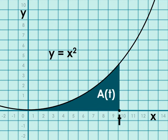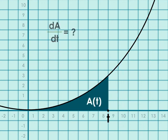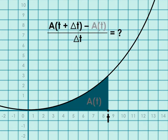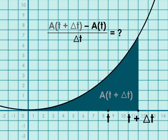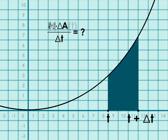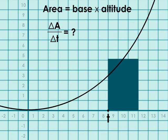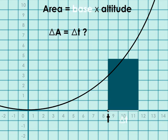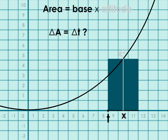Leibniz's function of t. Try to find its derivative, dA/dt. If the area from zero to t is A of t, then the area from zero to t plus delta t is A of t plus delta t. The area delta A is the same as the area of a rectangle of base delta t and height x squared for some x.